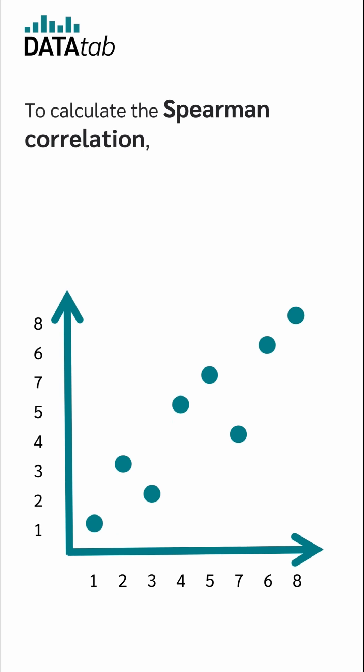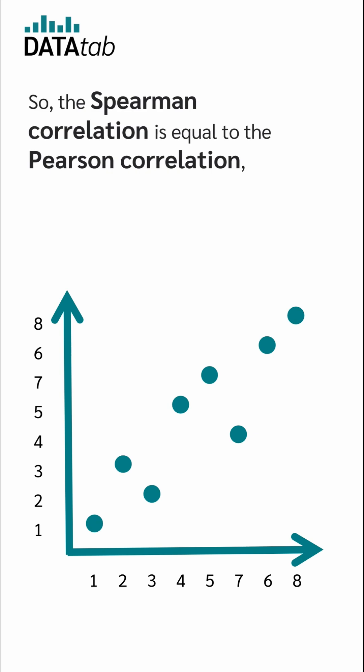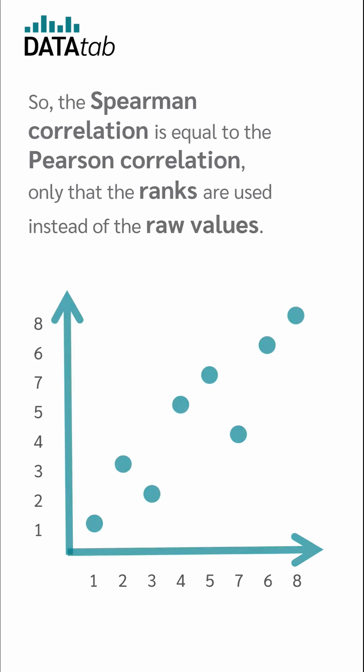To calculate Spearman correlation now, we simply calculate the Pearson correlation from the ranks. So the Spearman correlation is equal to the Pearson correlation, only that the ranks are used instead of the raw values.